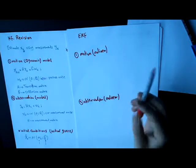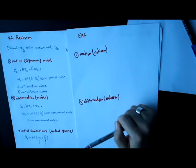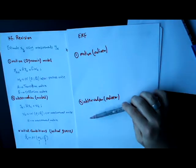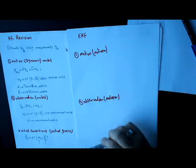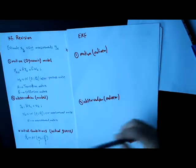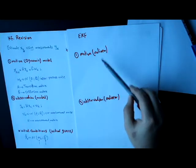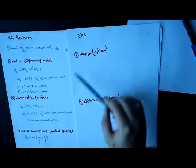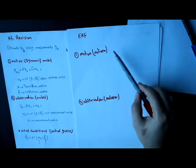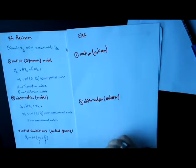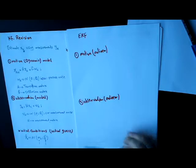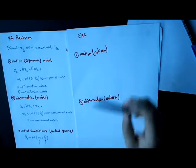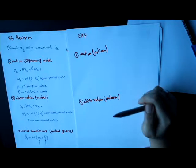To use the extended Kalman filter, at least one of these models should be nonlinear. So we can have a nonlinear motion model with a linear observation model, or a linear motion model with a nonlinear observation model, or a nonlinear motion model and a nonlinear observation model.